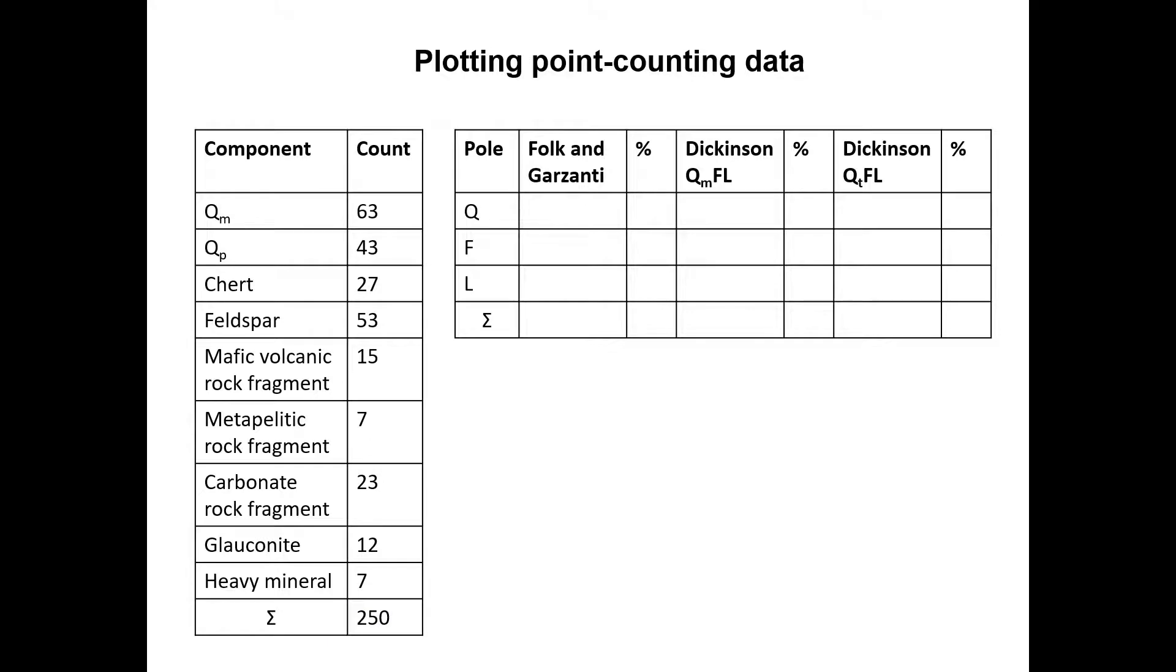So let's move on to an example. Let's consider we point counted a thin section. In total, we counted 250 grains. Now we need to recalculate our counts to percentages. These percentages differ depending on which ternary plot we decide to use.